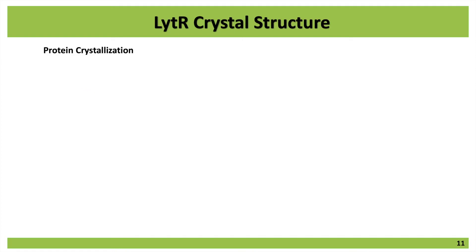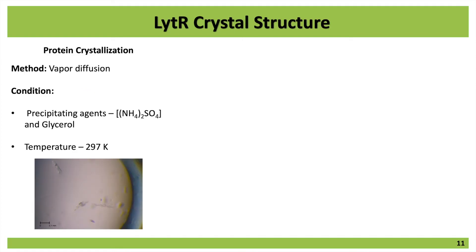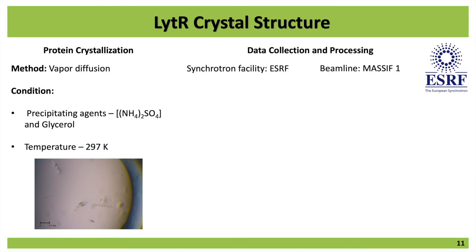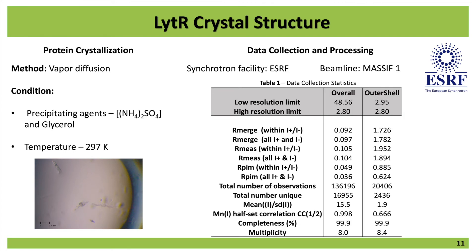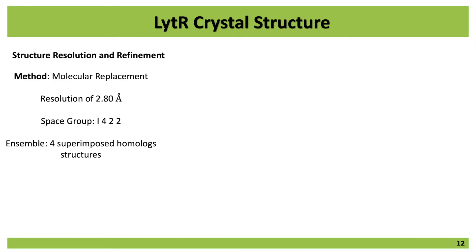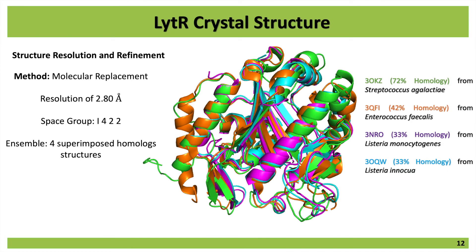Regarding the crystal structure, protein crystallization was done using the vapor diffusion method, using ammonium sulfate as a precipitating agent. Data collection was done at the ESRF at beamline MX-ID23-1, and here are the statistics of data collection — we were able to collect data that diffracted to 2.8 ångströms. To solve the structure, I used the molecular replacement method. The space group is I422, and for this I needed to use an ensemble. The best ensemble was made of four superimposed homologous structures, which I'm depicting here, and as you can see, the general topology of the proteins is the same with slight changes in the structures.